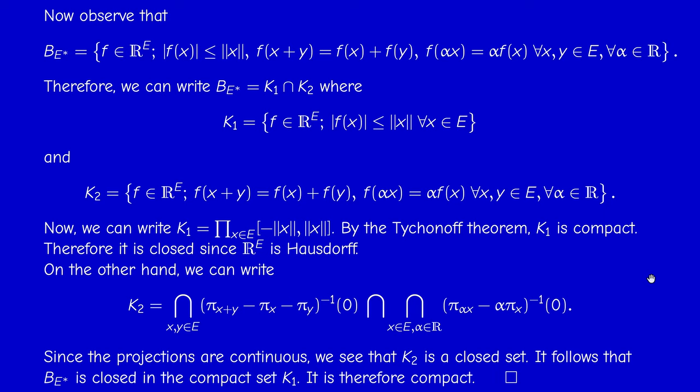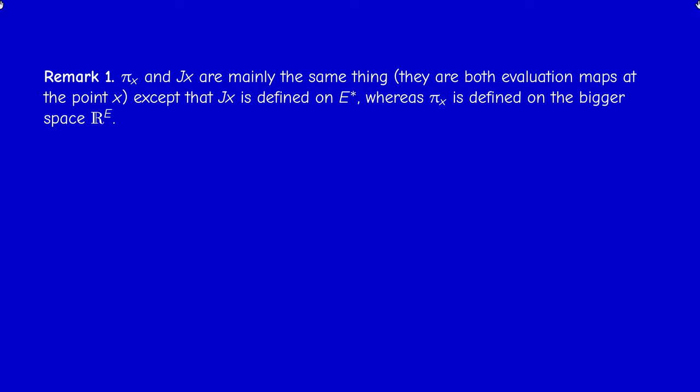This concludes the proof of Banach-Alaoglu — a central and fundamental result in functional analysis. First remark: sometimes we use π_x and sometimes J_x. They are essentially the same thing — both evaluate F at the point x — but they have different domains: J_x is defined just on E*, whereas π_x is defined on the bigger space R^E.